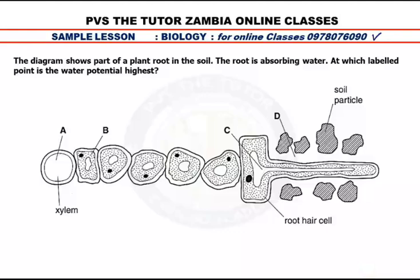In this sample lesson on biology, we look at a multiple choice question. It says: the diagram shows part of the plant root in the soil. The root is absorbing water. At which labeled point is the water potential the highest?